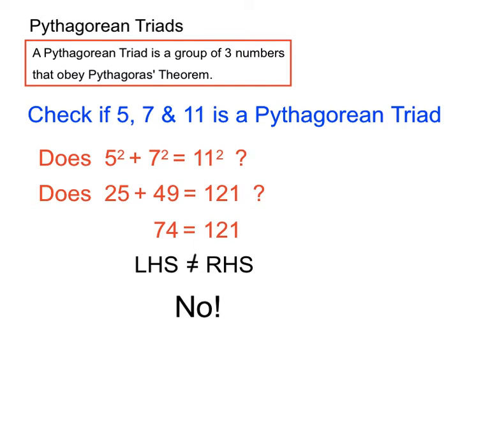So, the left-hand side does not equal the right-hand side with that arrangement of numbers. So, we'd say no. 5, 7, and 11 is not a Pythagorean triad. When we processed those three numbers through Pythagoras' theorem, they didn't actually work. They didn't create a mathematically satisfying process. So, no, we can't call them a Pythagorean triad.